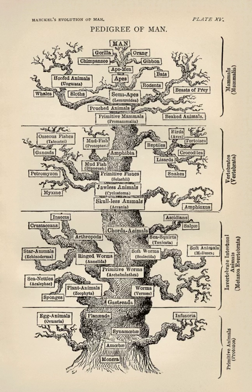A third way is by approach, such as field biology, theoretical biology, experimental evolution, and paleontology. These alternative ways of dividing up the subject can be combined with evolutionary biology to create subfields like evolutionary ecology and evolutionary developmental biology.